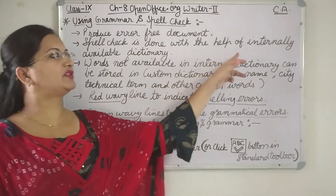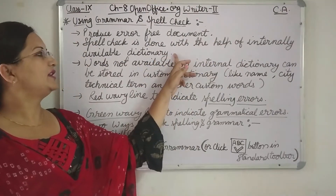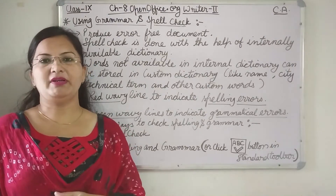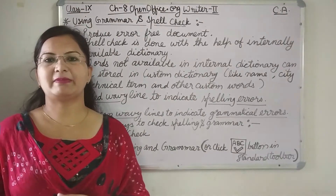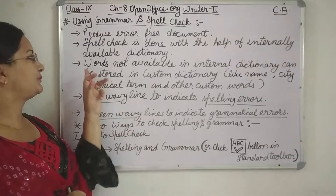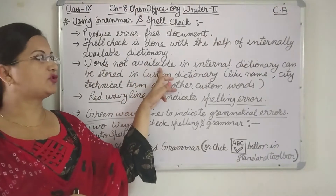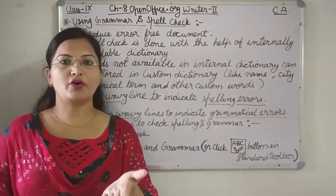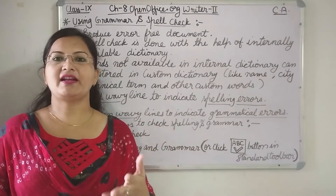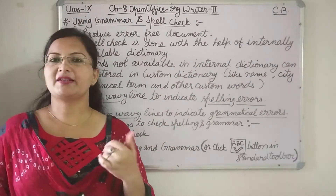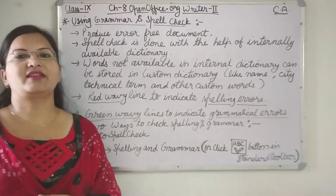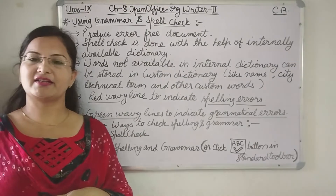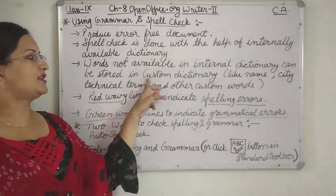Spell check is done with the help of an internally available dictionary. In Writer, there is an internal dictionary that can be used to check spelling mistakes automatically. But if a word is not available — like names, city names — those are custom words created by us, so they are not available in the internal dictionary.